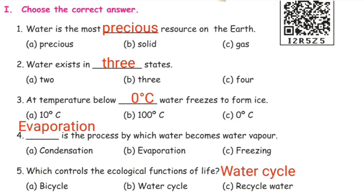Choose the correct answer. First one: water is the most dash resource on the earth. Options: precious, solid, gas. Answer one: precious. Water is the most precious resource on earth.